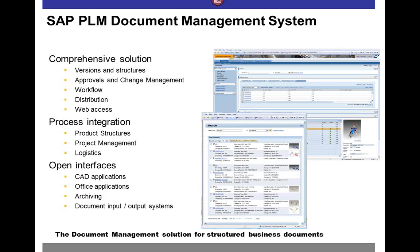You also have the ability within the document management system to perform distribution. Upon release of a specification, for example, the system can automatically take that document, look up a distribution list you have set up, and distribute that information automatically — both internally to an SAP GUI-type structure or via web access. It's a very open tool supporting CAD systems and office applications, with the ability to tie to other tools, including output and input device partners that SAP works with.